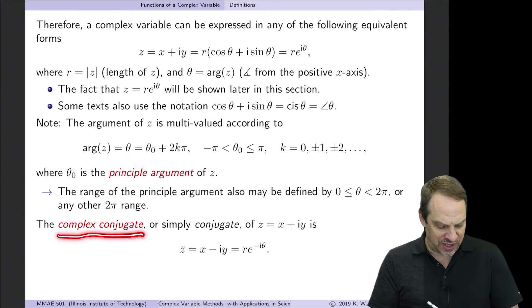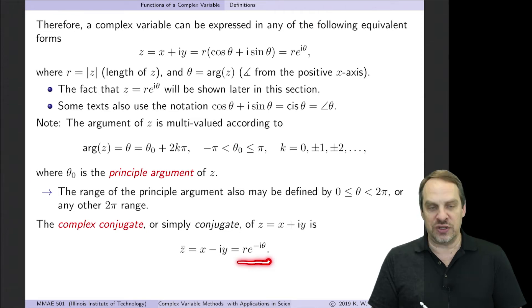Now the complex conjugate, if you have Z is X plus IY, Z bar is the complex conjugate of Z, and that's just X minus IY. Or if you use RE to the I theta, then the complex conjugate is RE to the minus I theta. All you have to do is change all your I's to minus I's, and you have the complex conjugate.